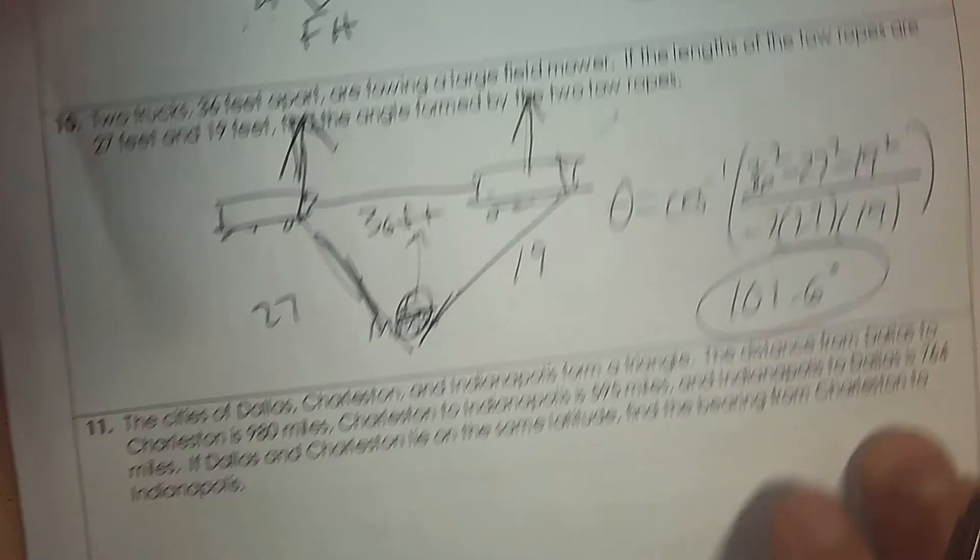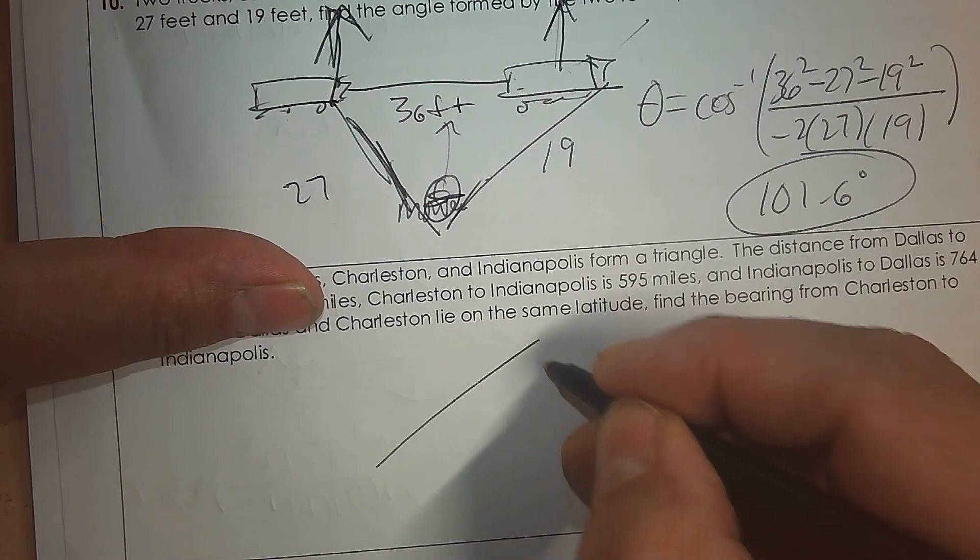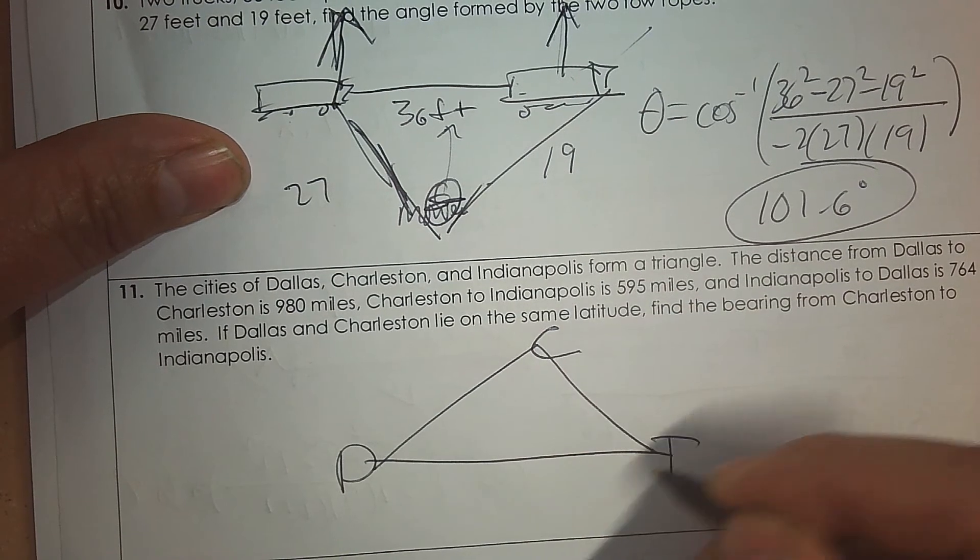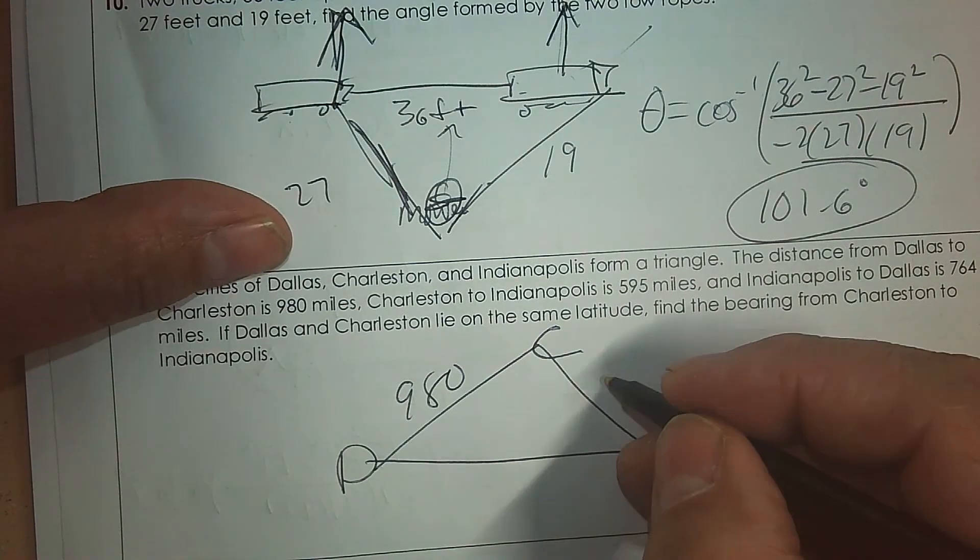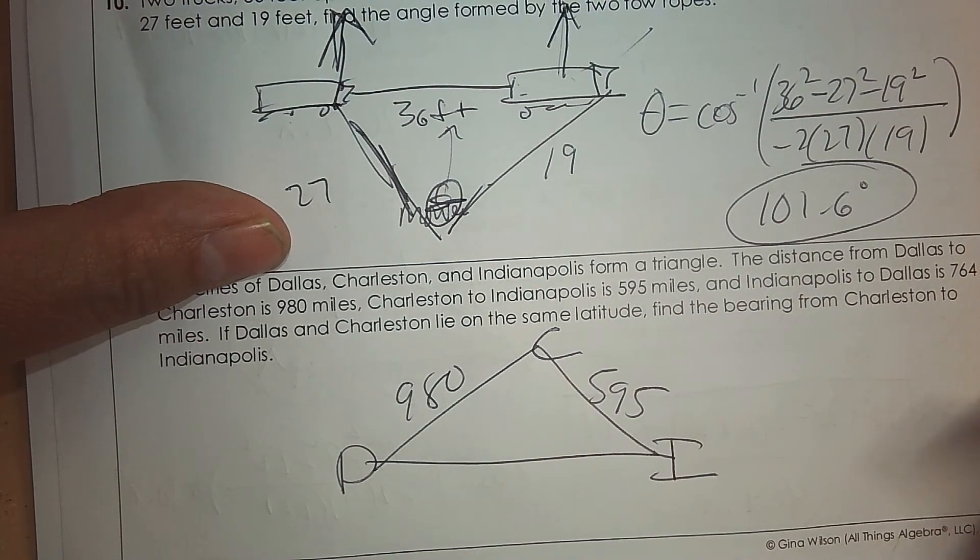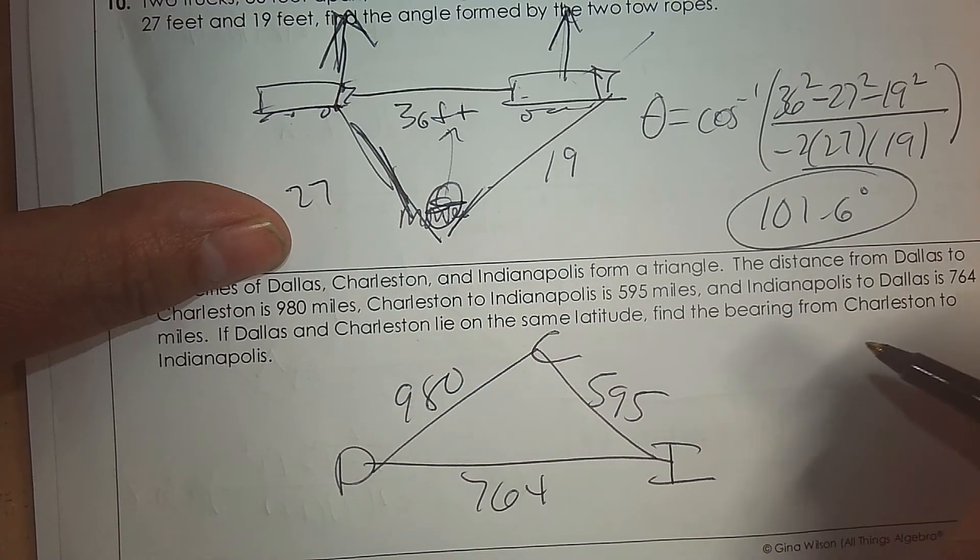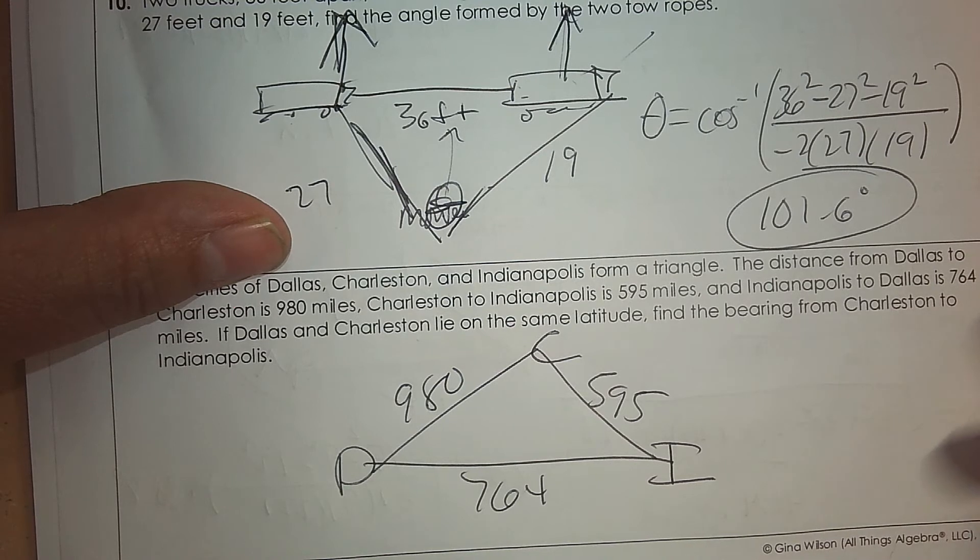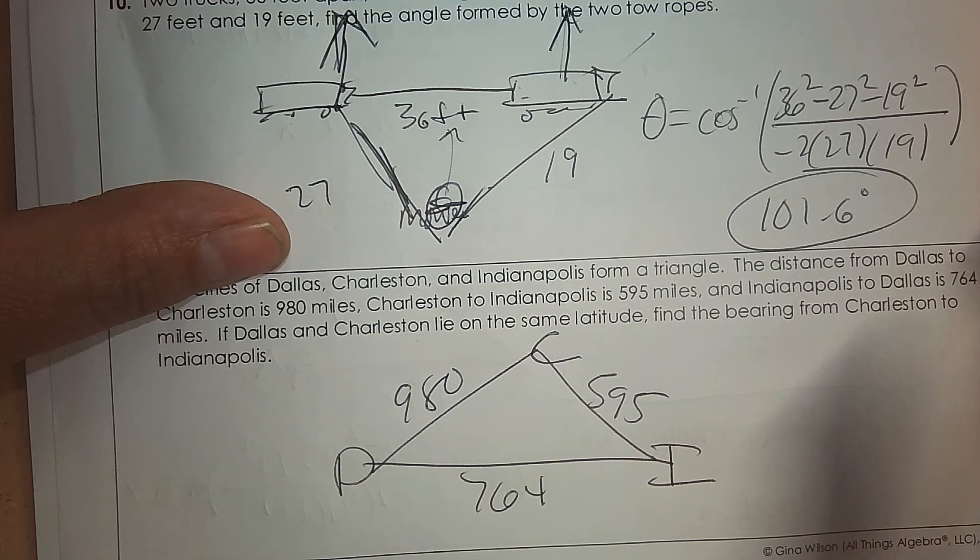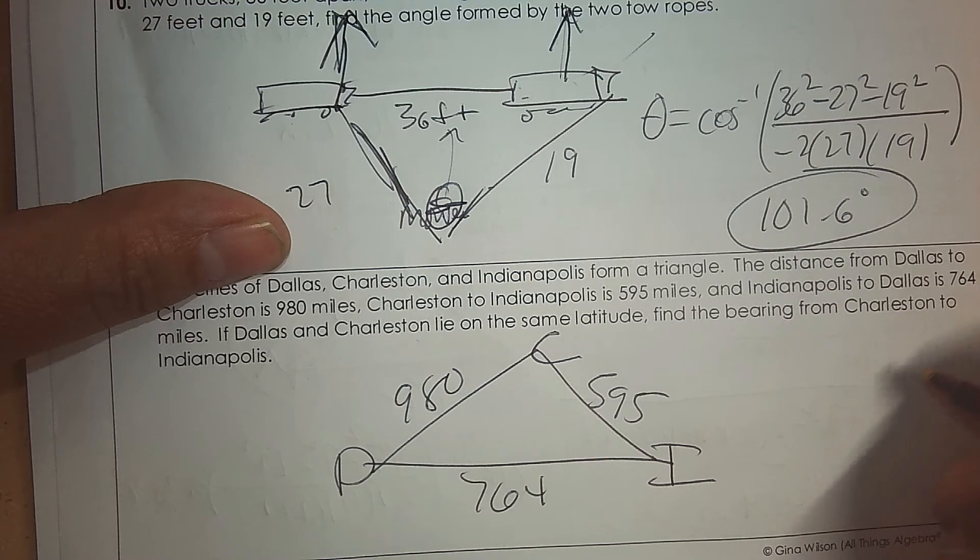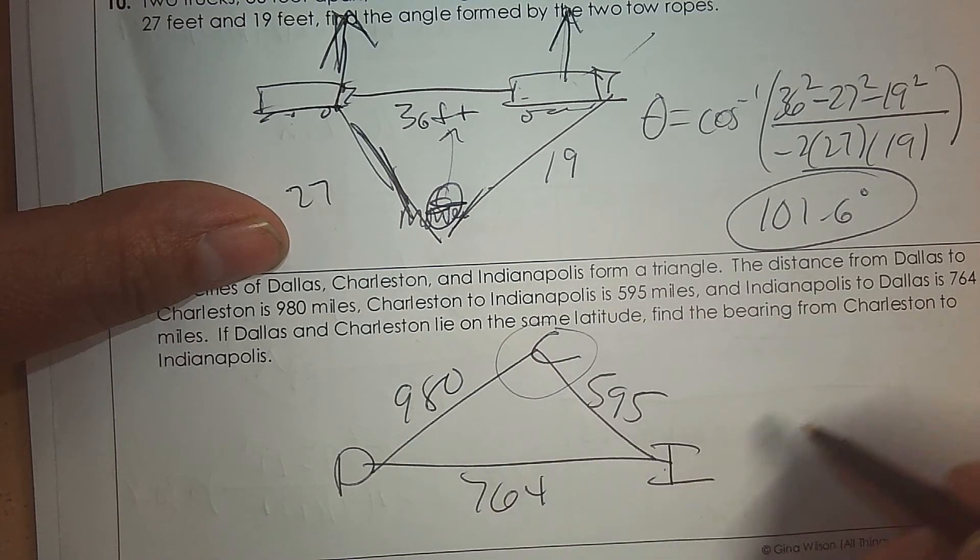All right, one more. I know the bell rang. I can do this. Cities of Dallas, Charleston, Indianapolis form a triangle. The distance from Dallas to Charleston, Charleston to Indianapolis, and Indianapolis to Dallas. So to label it, if Dallas and Charleston lie on the same altitude, find the bearing from Charleston to Indianapolis. From Charleston to Indianapolis. So we're going to take this one. We're going to first find that angle.